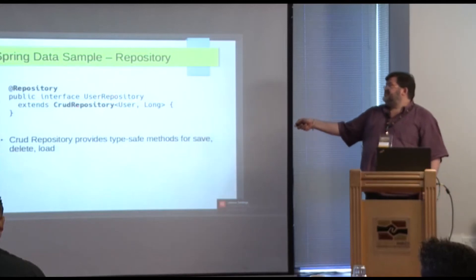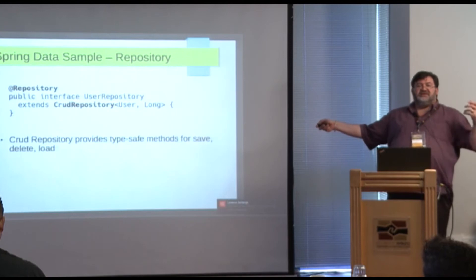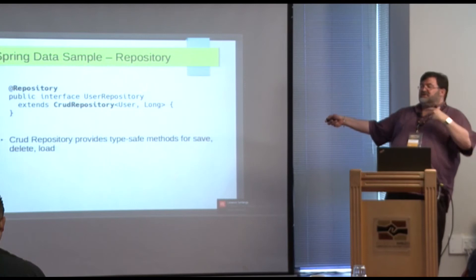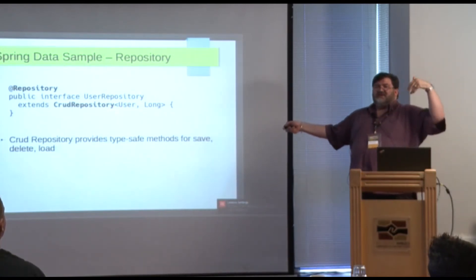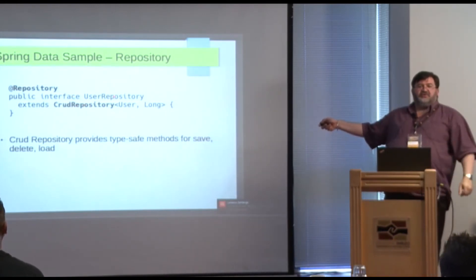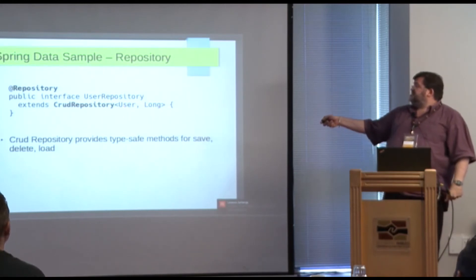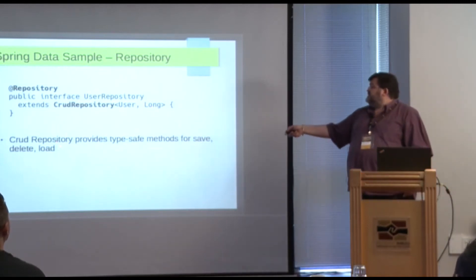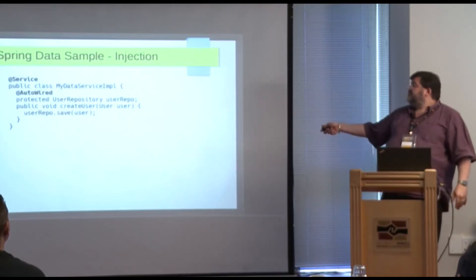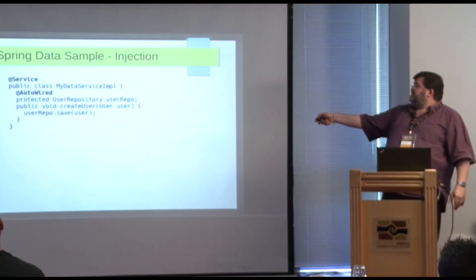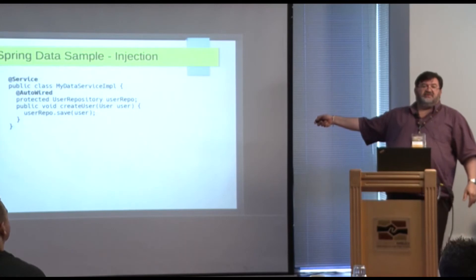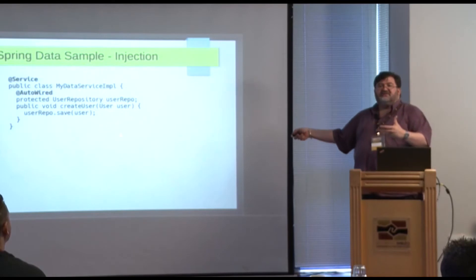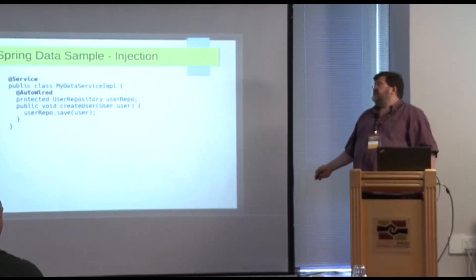You declare a repository interface, and Spring Data provides an implementation behind that repository interface — and at first that seems like magic. That repository interface implementation can be injected where you need it. CRUD repository is a part of Spring Data, and it defines a class on which you can perform a save, delete, load, and find all. You say this is my entity and that is the type of the key — and that's all you have to do. If you want to use it, let's say you've got a service implementation wiring in your repository, you just say save the user.